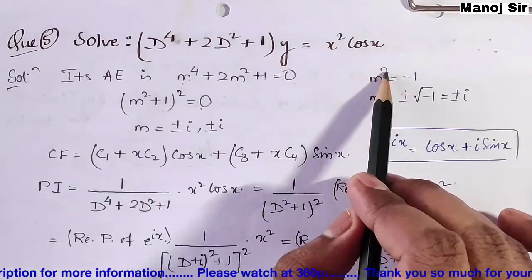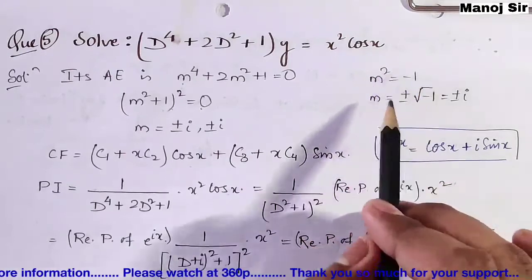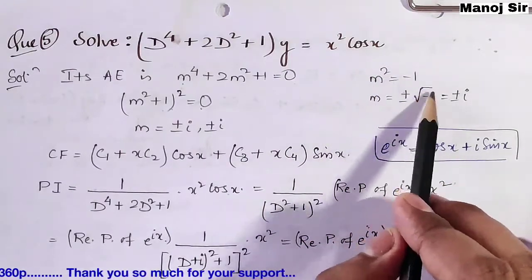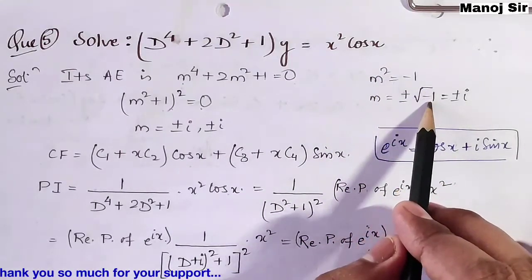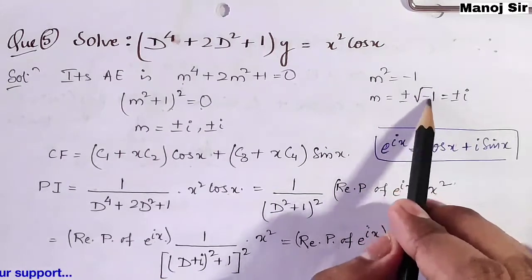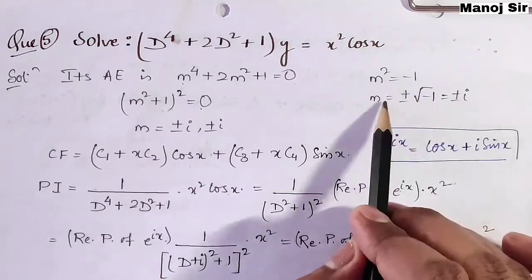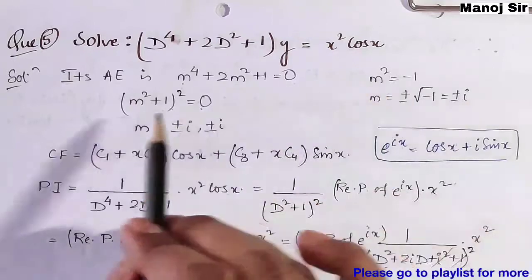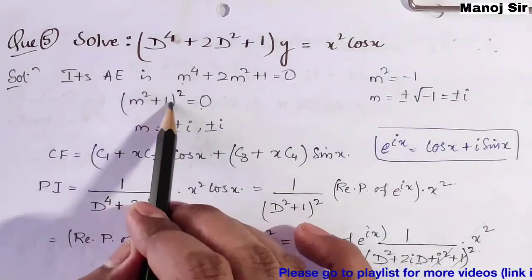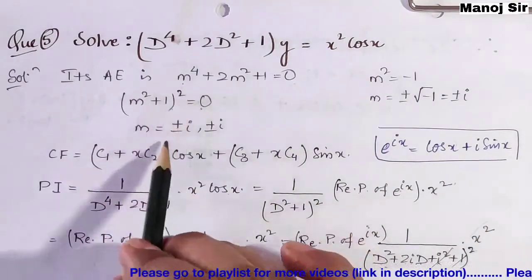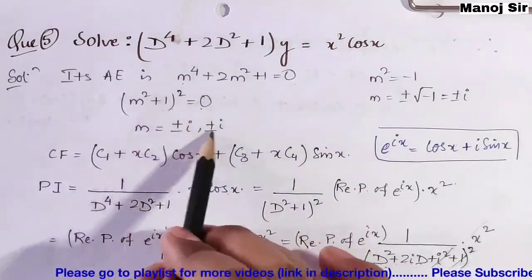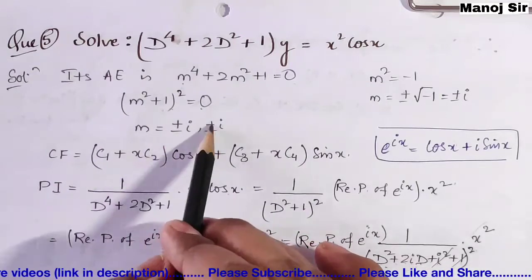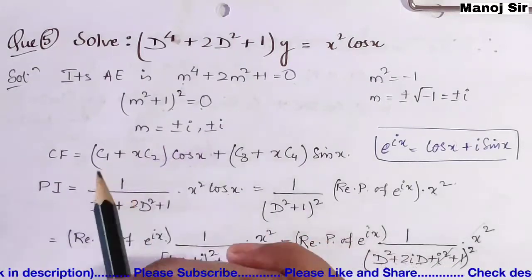From (m² + 1)² = 0, we get m² = −1, giving m = ±√(−1) = ±i. Since the factor (m² + 1) appears twice, the roots are repeated: m = ±i, ±i.